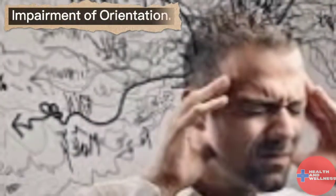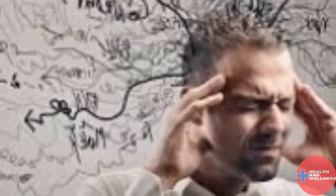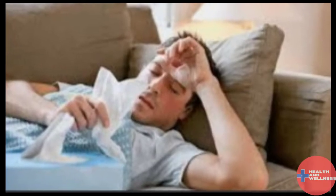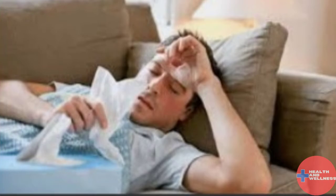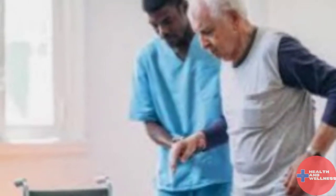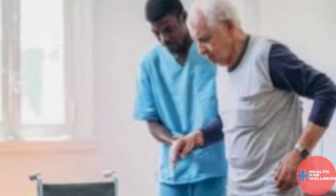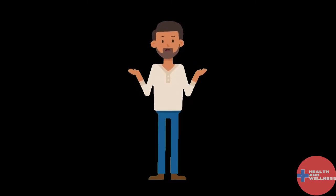Here are the five impairments to look for in delirium. Number 1: Impairment of Orientation. The individual is disoriented to place and time. Often he cannot tell where he is, or the day or time. He is lost to the world around him.